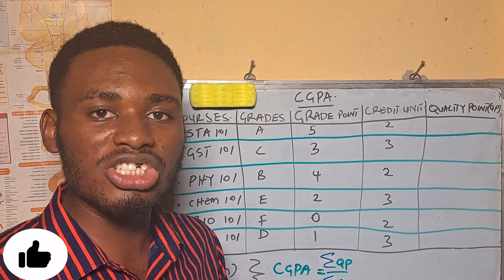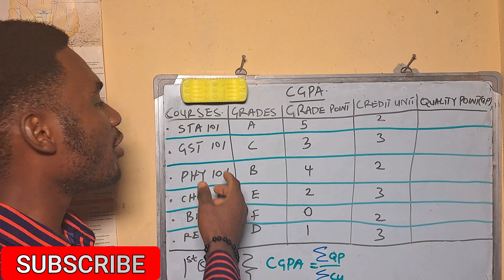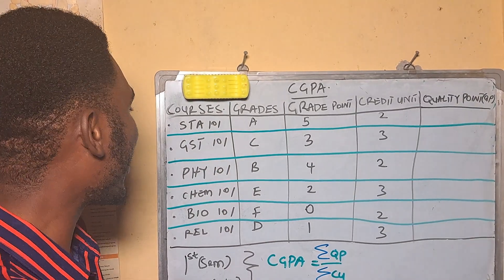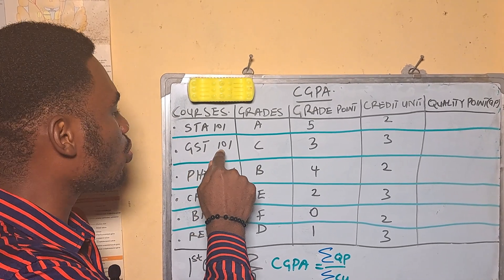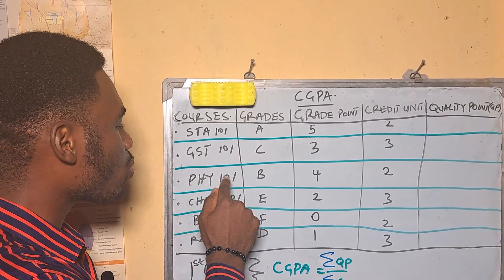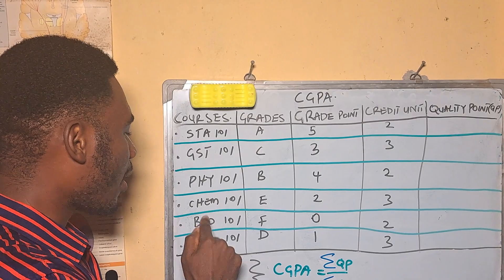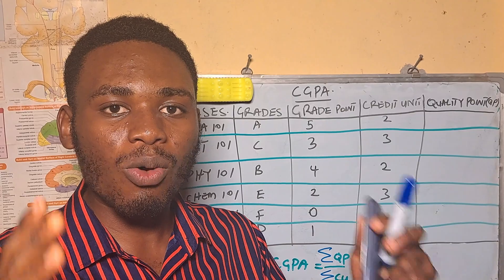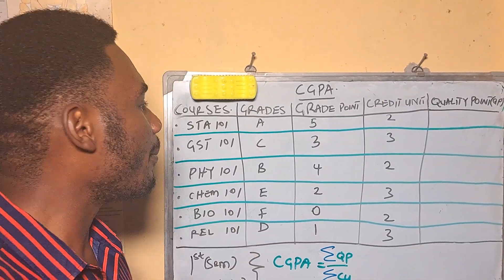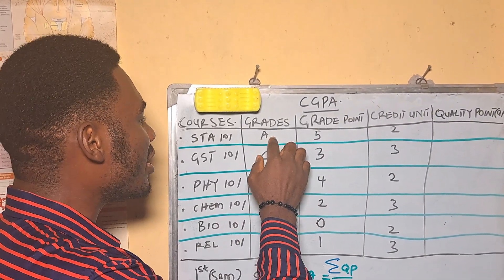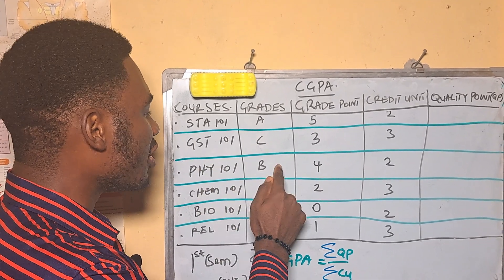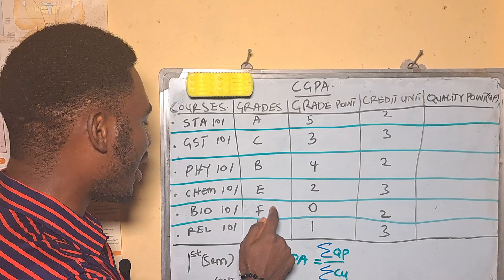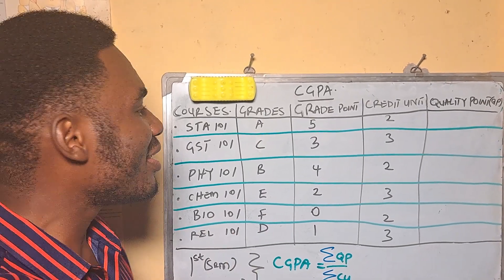Our first column is going to have your courses for the semester. In this particular example I have STAT 101, GST 101, Physics 101, Chem 101, Bio 101, and Religion 101. The second column is going to have the grades you have acquired for the semester. For example, this young man had an A in Statistics, a C in GST, a B in Physics, an E in Chemistry, an F in Bio, and a D in Religion.